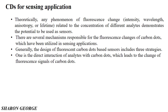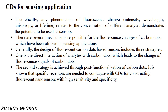The second strategy is post-functionalization of the carbon dot. In the first case we directly combine the carbon dot with metals without functionalization. But in the second case, we functionalize the carbon dot — specific receptors are needed to be conjugated with the carbon dot for constructing the fluorescence sensor. We have to modify our carbon dot surfaces with suitable functional groups so that we can do the sensing.